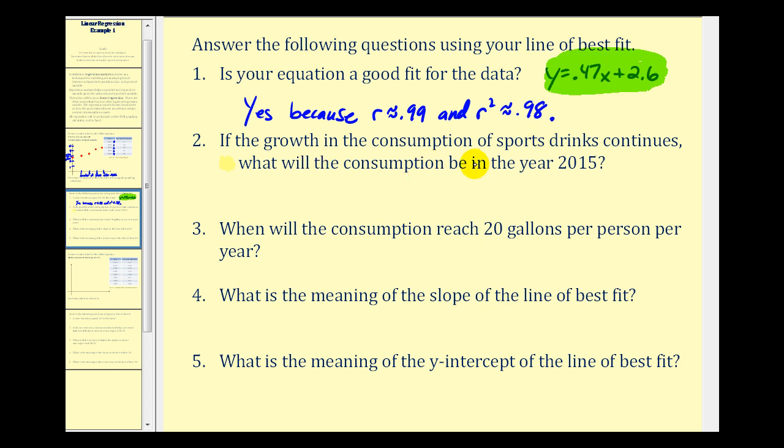Number two, if the growth of consumption of sports drinks continues, what will the consumption be in the year 2015? Remember the base year was 2002. So if we take 2015 and subtract 2002, that'll give us the x value that we sub into our equation. This will be 13. So we want to know the value of y when x is 13. This will give us our prediction for the year 2015.